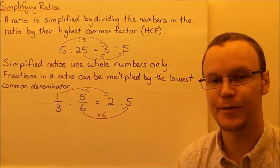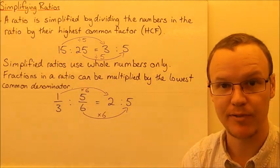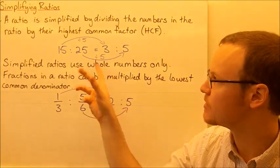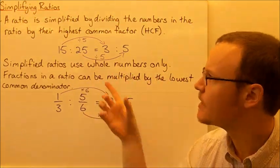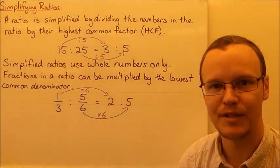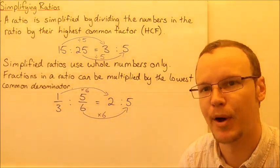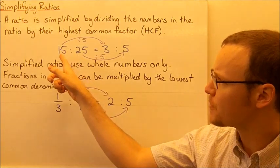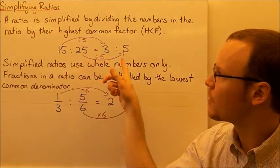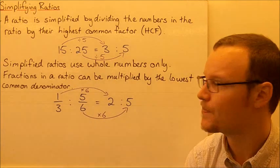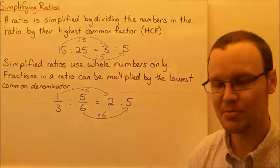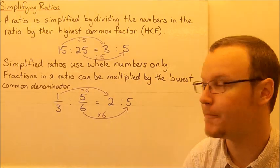So if we've got the ratio 15 to 25, it's not in simplified form — it's not in the lowest form that we can get it. The highest common factor of 15 and 25 is 5; it's the biggest number we can divide them both by. So if we divide 15 by 5 we get 3, and 25 divided by 5 we get 5. This is an equivalent ratio because we've divided them both by the same number.